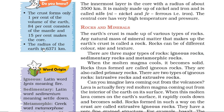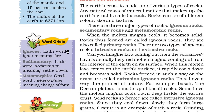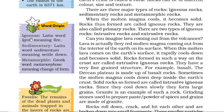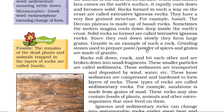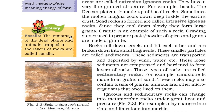The radius of the earth is 6371 km. There are certain words coming up: igneous, sedimentary, and metamorphic rocks. Igneous comes from the Latin word ignis meaning fire; sedimentary from the Latin word sedimentum meaning settle down; metamorphic from the Greek word metamorphose meaning change of form. One more word is fossils — the remains of dead plants and animals trapped in layers of rocks are called fossils.